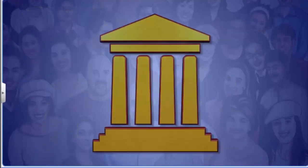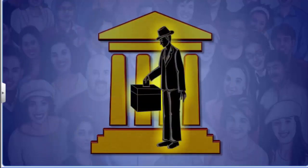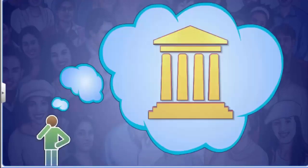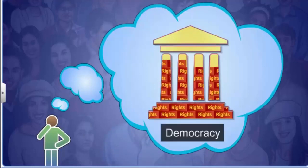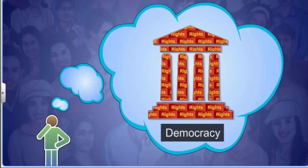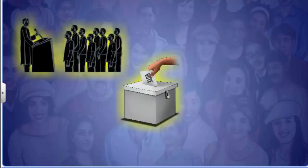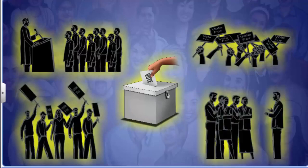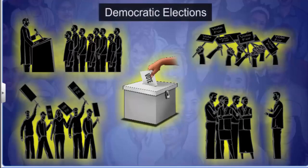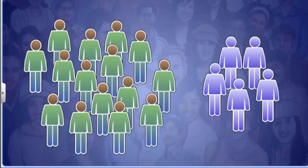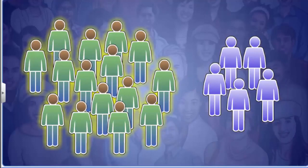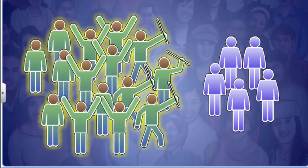In a democracy, every citizen has the right to vote and the right to be elected to government. Therefore, rights are the basic requirement to sustain a democracy. Citizens must have the right to express their opinion, form political parties, and take part in all sorts of political activities for the elections to be called democratic. Rights play a special role in a democracy to protect the minorities from being suppressed by the majorities.